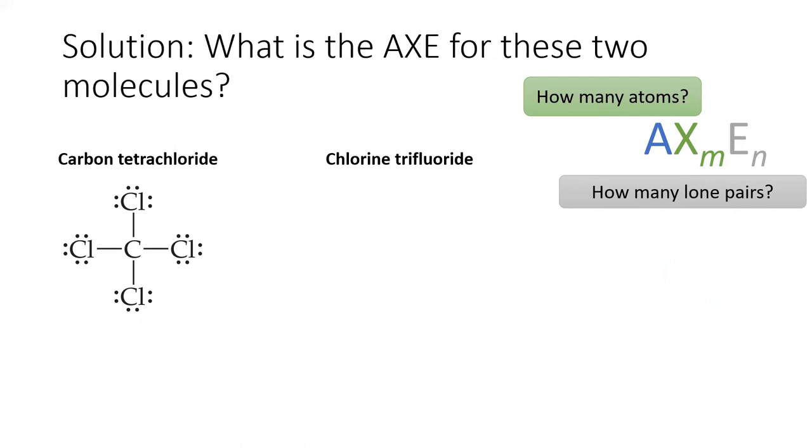We'll start with carbon tetrachloride, which has four chlorine atoms bonded to the central carbon atom. The carbon atom has no lone pairs. Carbon tetrachloride is AX4E0.